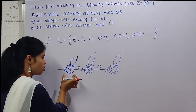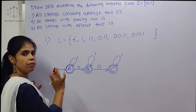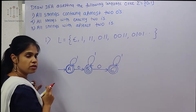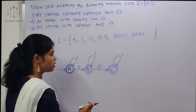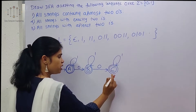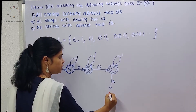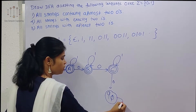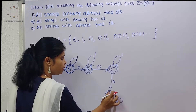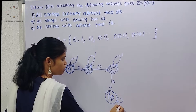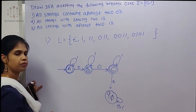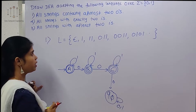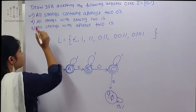So states A, B, and C are all final states. What about the 0 transition from C? That will go to a dead state. The dead state handles both 0 and 1 transitions with self-loops. This completes the finite automaton for the first example — accepting strings with at most two zeros.